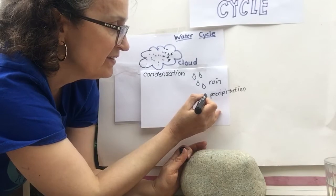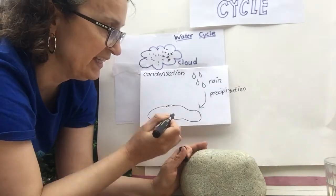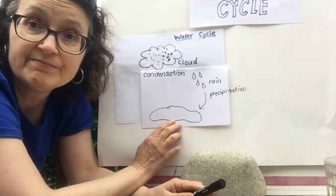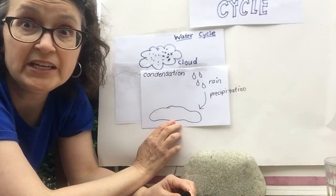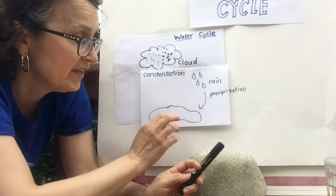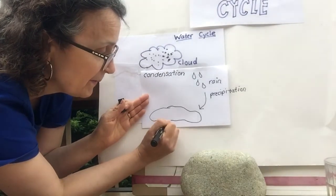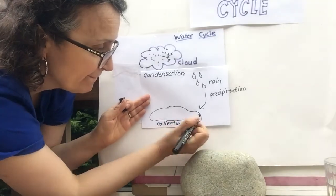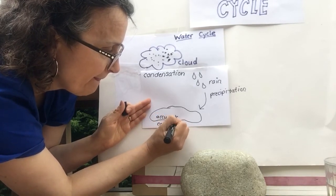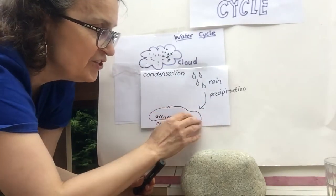As it comes down to the ground, we start to see water collecting. This could be a small collection like a puddle in your driveway, or a big collection like a lake — a river is a collection of water, streams and creeks. Scientists call this accumulation, or collection — they mean the same thing. Accumulation is your lake, your puddle that you can step in.